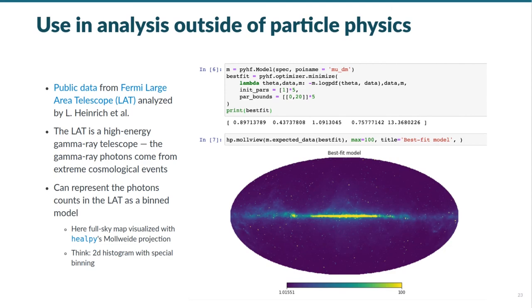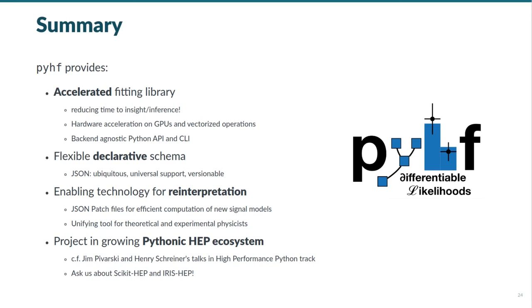In summary, PyHF is a statistical library that provides accelerated fitting for high energy physics models by exploiting tensor libraries as computational backends for vectorized operations, automatic differentiation, and hardware acceleration. It uses a JSON schema to provide a flexible specification for declarative models. And through JSON patch is an enabling technology for reinterpretation of physics results. PyHF is also at the heart of the growing Pythonic ecosystem in high energy physics.